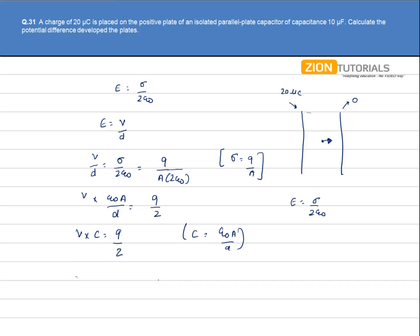So on substituting the value we have V is equal to Q. The Q value is given by 20 micro coulomb, 10 to the power minus 6 coulomb, divided by 2, divided by capacitance that is 10 into 10 to the power minus 6. Which comes out to be 1 volt.